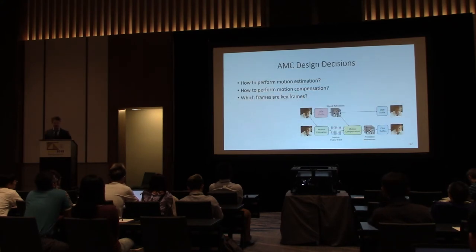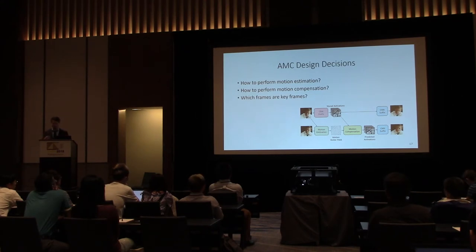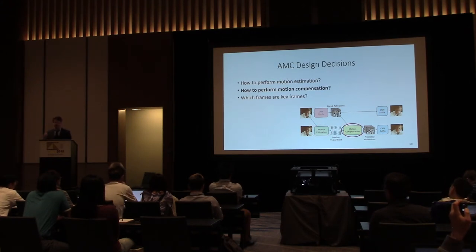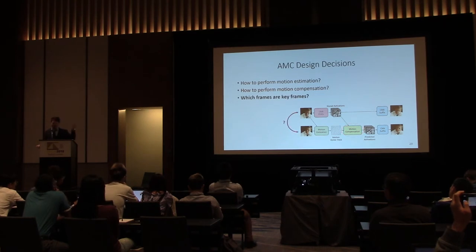For anyone creating an AMC variant, there are key questions to answer: How are you going to perform motion estimation? How are you going to do motion compensation? And which frames are going to be keyframes?